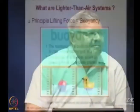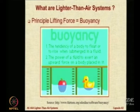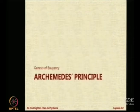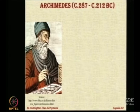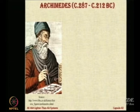We have studied in school about buoyancy. Basically, it is the tendency of a body to float or to rise when submerged in a fluid, and when that happens, there is a force acting on the body. This particular principle was given to us by Archimedes, so we call him the genesis of buoyancy. Archimedes was a very famous mathematician who has given many different solutions to us.